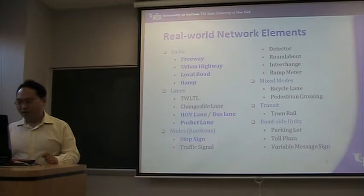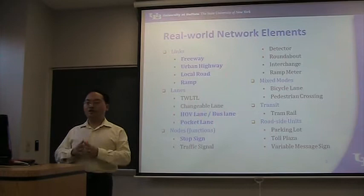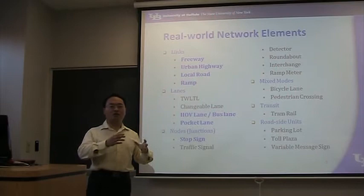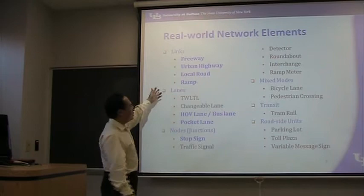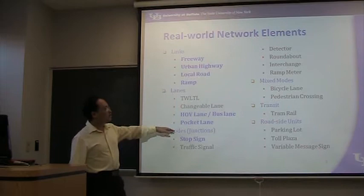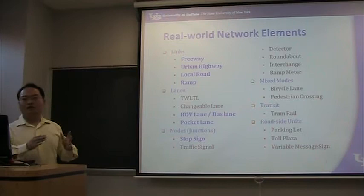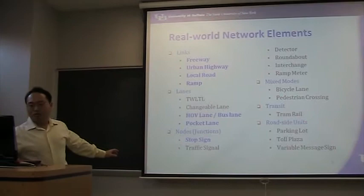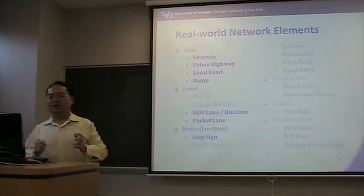Today's lecture is about network. Here I listed some important elements of a real-world surface transportation network — not including ships, airplanes, or pipelines. We can categorize the elements into links, lanes (lanes are included in links), and nodes or junctions, and these are for mixed mode, transit, and roadside units. The blue bold items are the ones we are going to talk about today — we'll learn how to model them. Others will be explained in following lectures.